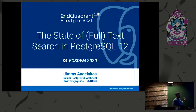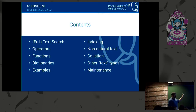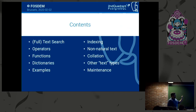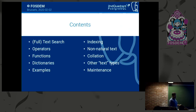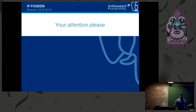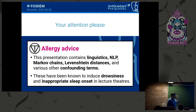Let's see how you can search for text in Postgres. We're going to look at what full text search means, operators and functions, what dictionaries are in Postgres, a few examples, how to index text in Postgres, how to deal with text that isn't natural language, what collations are, what other things you can search for that are not strictly text, and how to keep this whole thing running. Now, are you excited for full text search? You shouldn't be — things like this have been known to induce drowsiness and inappropriate sleep.